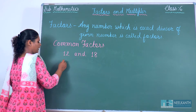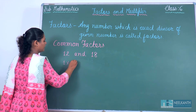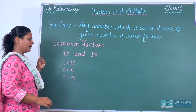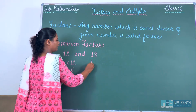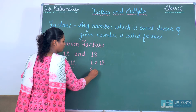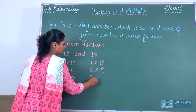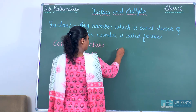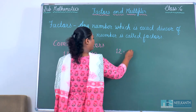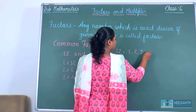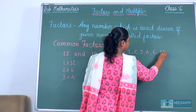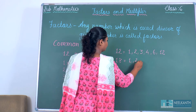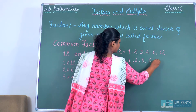First of all, we have to find the factors of 12. Factors of 18: 1 times 18 is 18, 2 nines are 18, and 3 sixes are 18. Factors of 12 are 1, 2, 3, 4, 6 and 12 itself. Factors of 18 are 1, 2, 3, 6, 9 and 18.